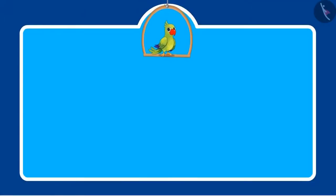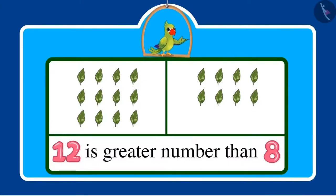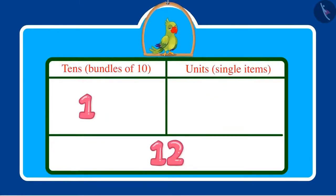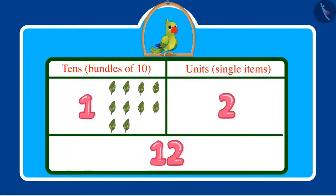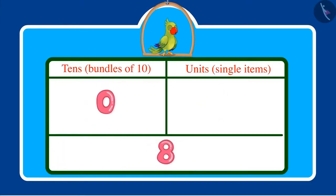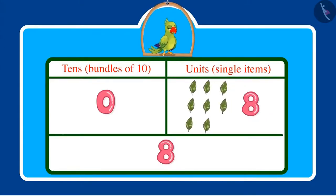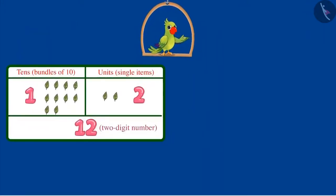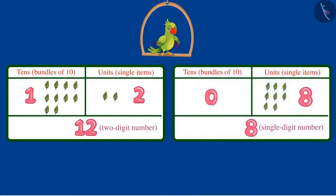So children, you saw that 12 is a greater number than 8. Because 12 has a 10, which means 10 items like 10 leaves, and 2 units meaning 2 single items like 2 leaves. So total is 10 and 2, which is 12 leaves. And 8 has 0 tens and 8 units, which means 8 single items such as 8 leaves. Therefore, 2-digit numbers such as 12 are greater than single digit numbers such as 8. Did you understand, kids?